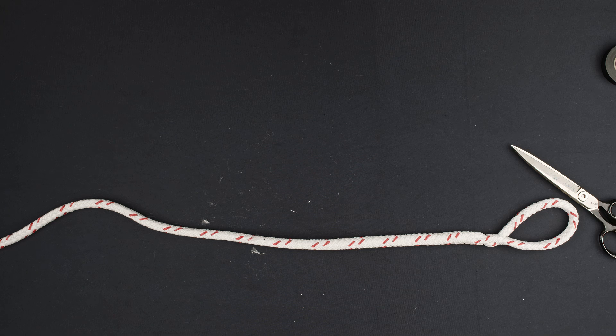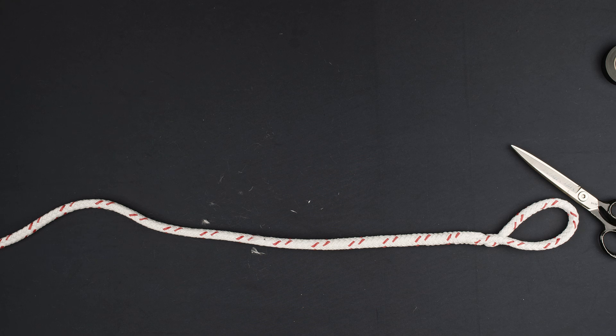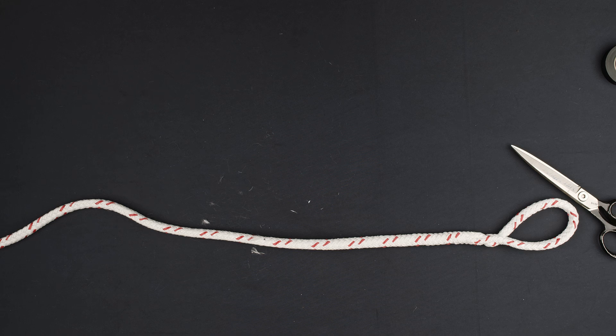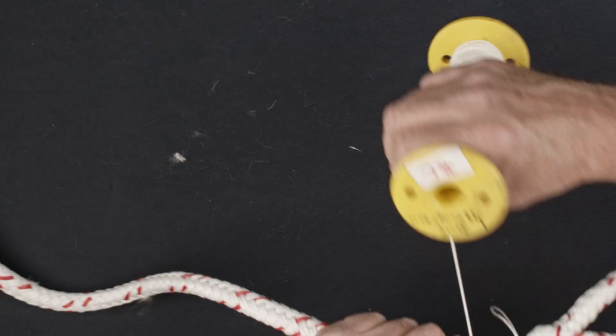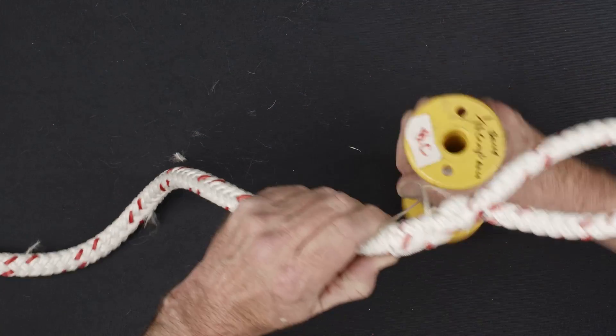This splice must be completed with a whip lock or box stitch approximately one inch from the base of the last brummel. To form the whip lock, begin by placing a short loop of whipping twine approximately one inch below the base of the last brummel.